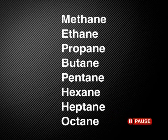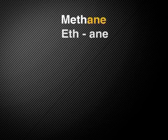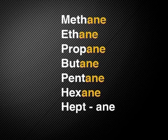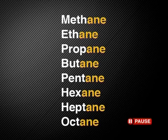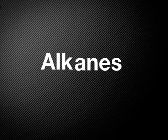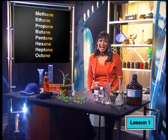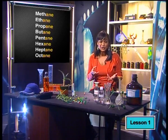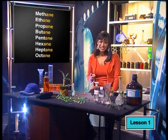Can you see any similarities between the word alkane and the names of the molecules? We have methane, ethane, propane, butane, pentane, hexane, heptane, and octane. That's right — alkanes all end in the letters A-N-E. So if a molecule's name ends in -ane, the carbon atoms in the molecule are bonded with single covalent bonds. Throughout organic chemistry, you will see this relationship between the structure of molecules and their names.